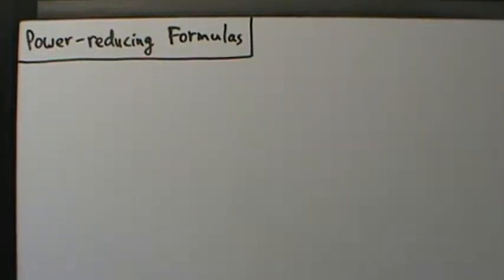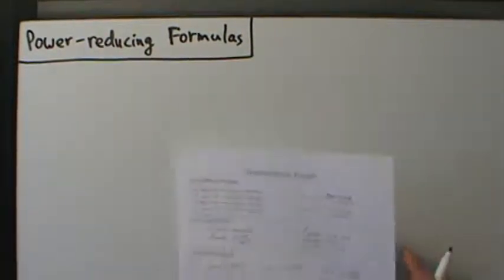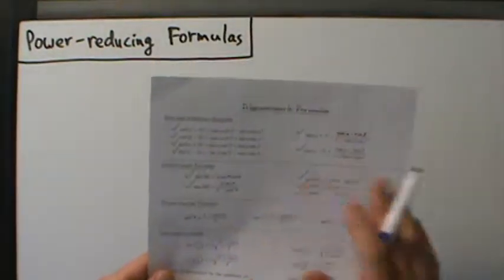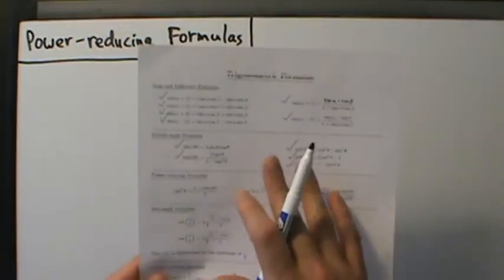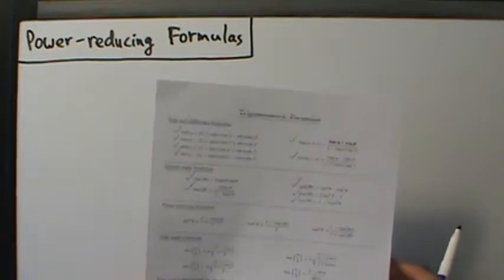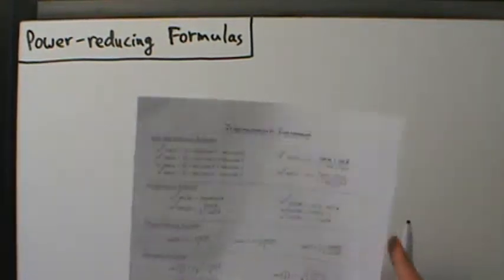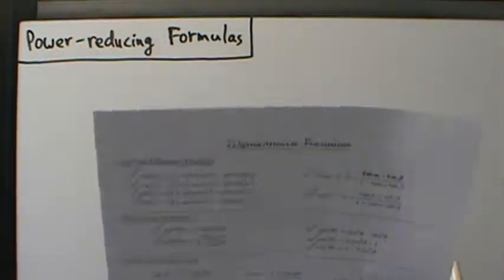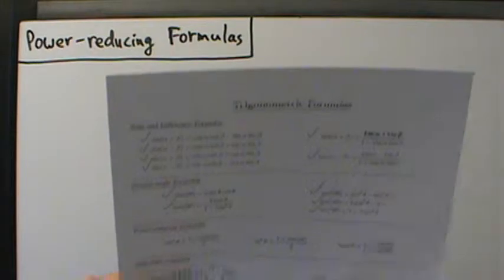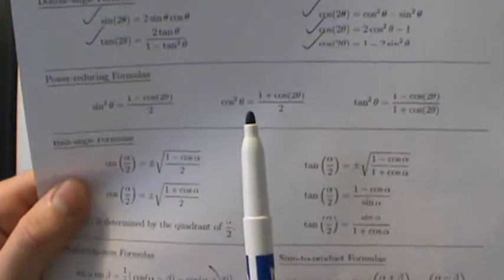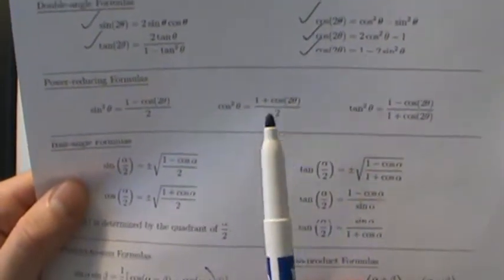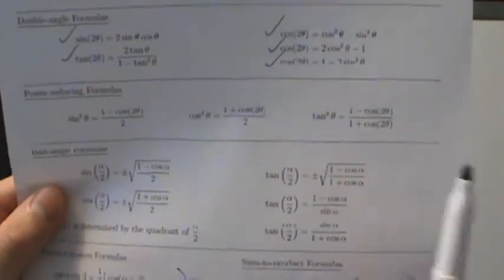Now we're going to start talking about the power-reducing formulas. They're the next set of formulas on this sheet we've been using. If you want to copy this formula sheet, check the video description — there's a link, you can click it, open it up, print it out, and follow along. So we have these power-reducing formulas: sine squared of theta, cosine squared of theta, and tangent squared of theta.